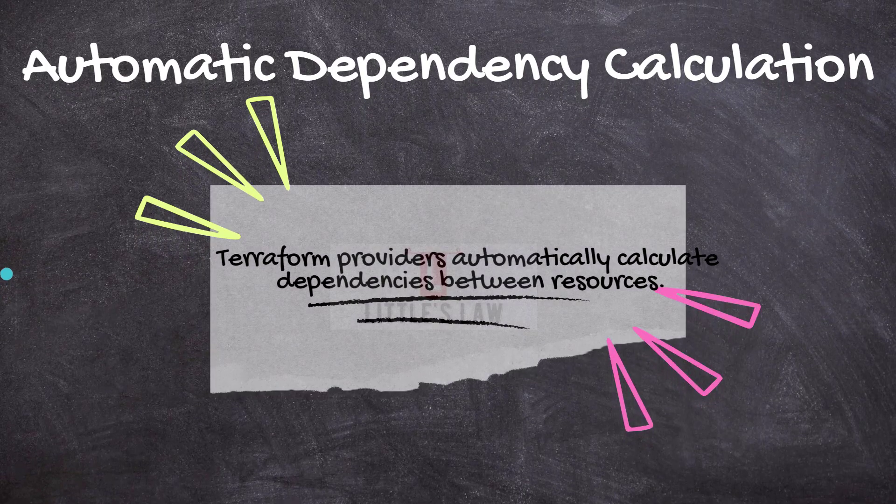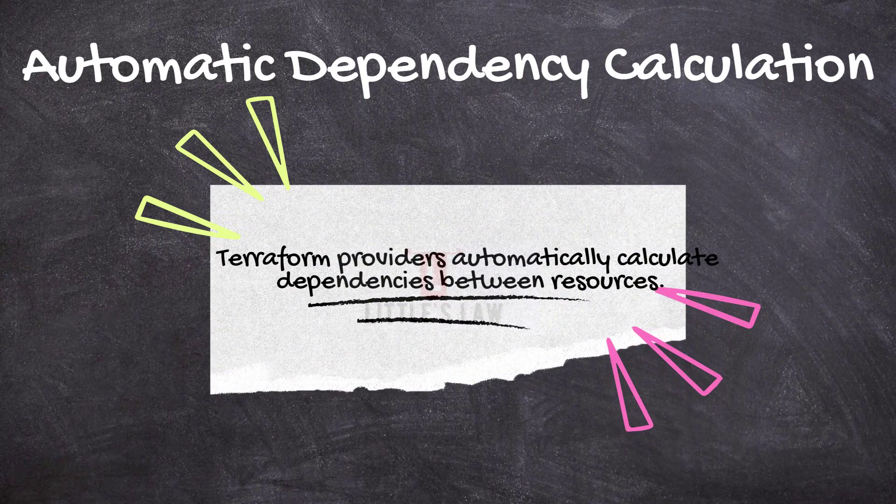Moving on to automatic dependency calculation: Terraform providers automatically calculate dependencies between resources. Because of this resource dependency tracking, Terraform ensures that resources are created or destroyed in the correct order to maintain consistency and avoid errors.